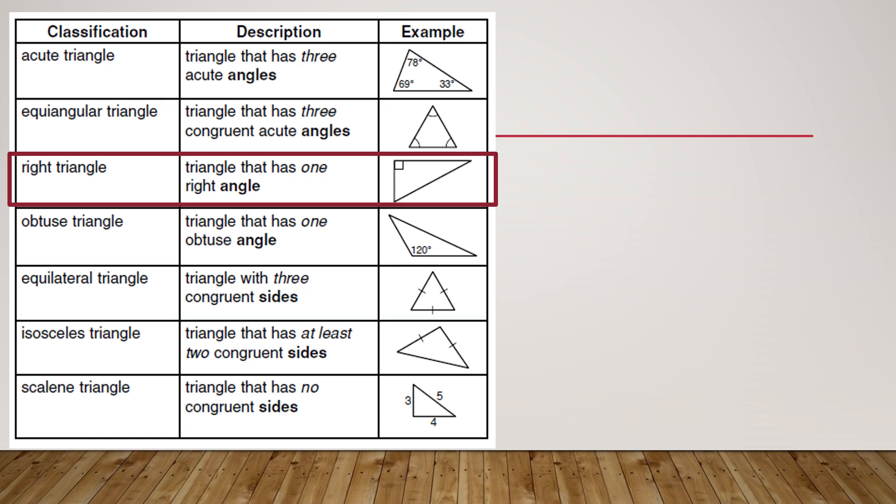We have a right triangle, so we just need to know that you have one 90 degree angle, which 90 means right, and the box also means right.